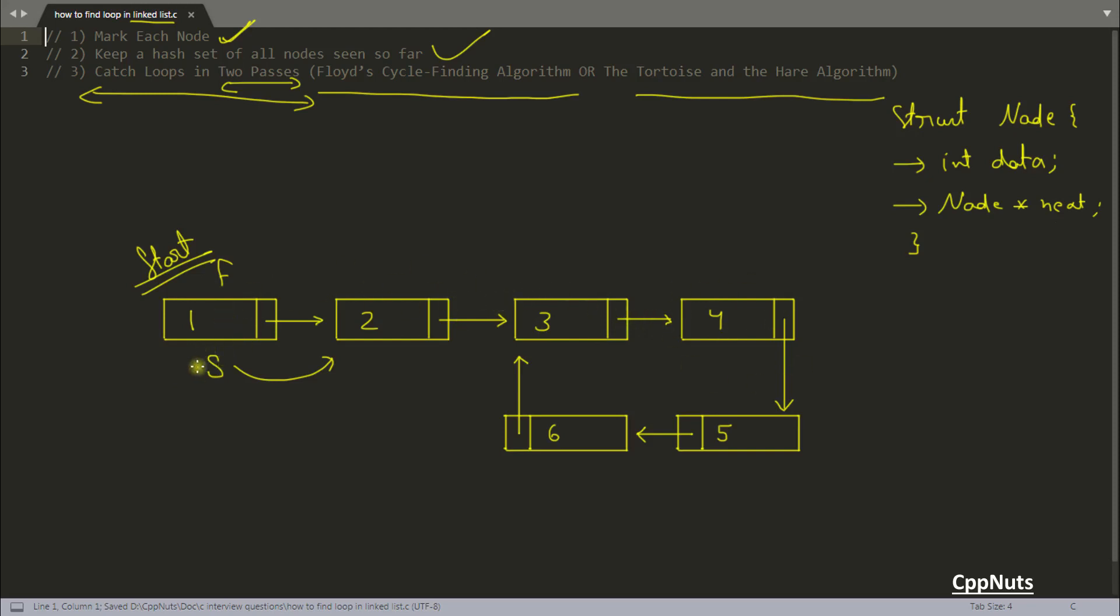As I said slow - if there is a loop then only they will point to the same location, otherwise this fast will reach to the end and your loop will terminate. So as I said slow will go one by one and fast will go by skipping one. So this fast will go here. Let's make this fast, this is slow, then again this is slow and this is fast. Fast is not equal to slow, we will move further. So fast will go here.